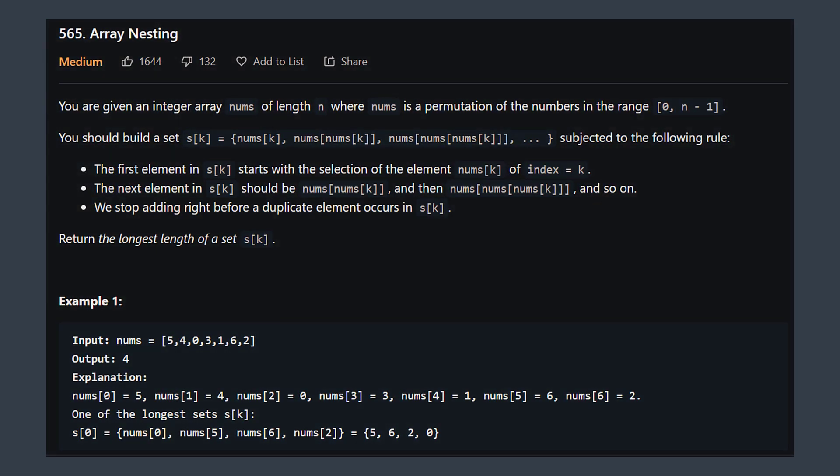We are given an array nums of elements that represents a permutation of elements of the range zero to n minus one inclusive. And we want to find the longest sequence where we start from an element nums[k], then the next element is nums[nums[k]], then nums[nums[nums[k]]], and so on until we go back to the initial element.